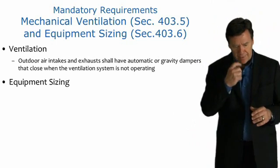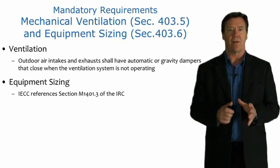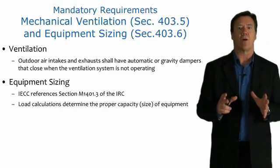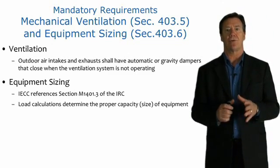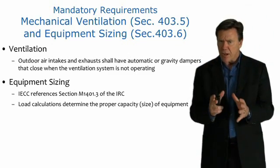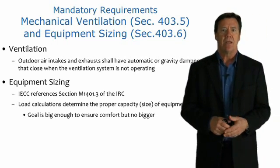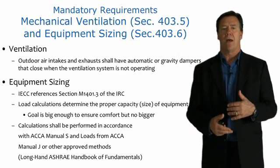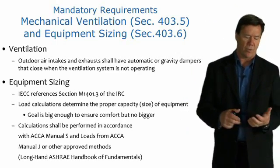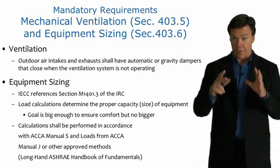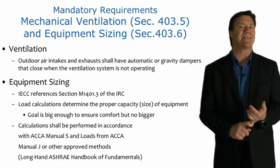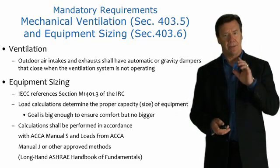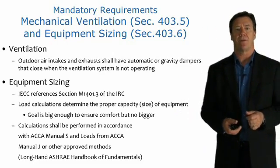Equipment sizing: the IECC refers to the mechanical code and requires that load calculations be done to ensure the building is comfortable but no larger than absolutely necessary. We use the Air Conditioning Contractors Association of America sizing protocols — Manual J to determine building loads, Manual S to select the equipment, and Manual D to design the ducts. This is a requirement within the code.